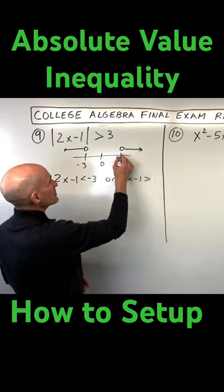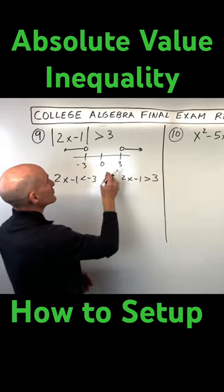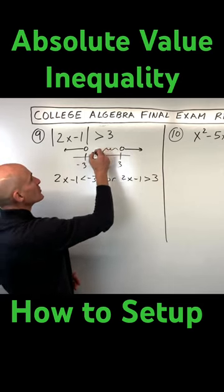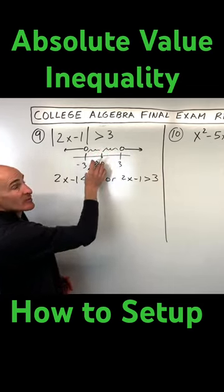2x minus 1 has to be greater than positive 3. See, both of these are three units from zero.